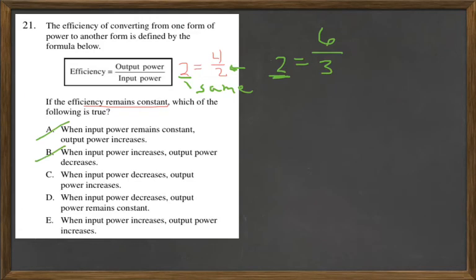How about C? On C, when input power decreases, so the denominator, so let's say that now we have 2 equals 1, it decreased.